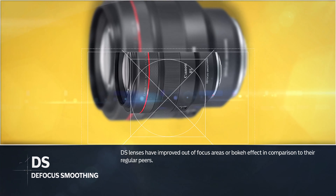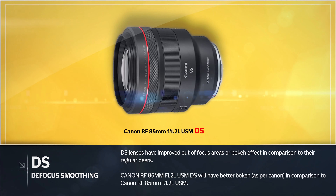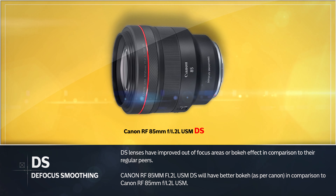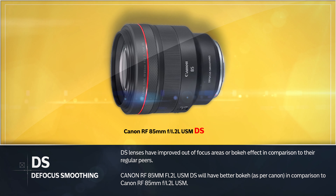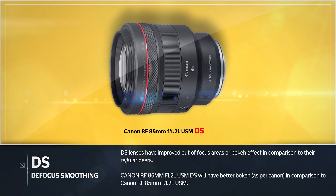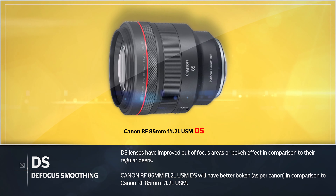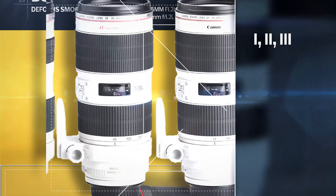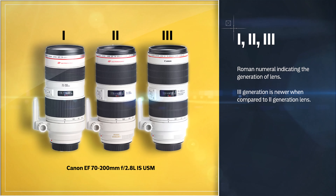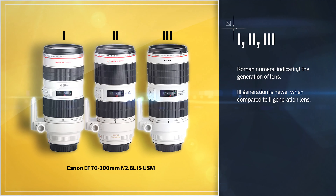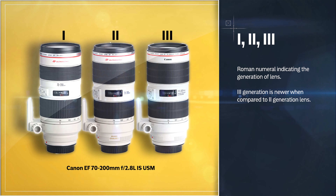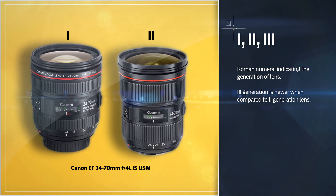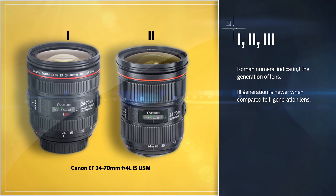DS stands for Defocus Smoothing. DS lenses have improved out-of-focus areas, or bokeh effect, in comparison to their regular counterparts. Roman numerals such as I, II, and III indicate the generation of the lens — a 3rd generation lens is newer when compared to a 2nd generation lens.